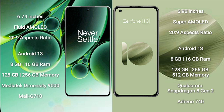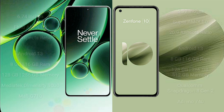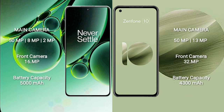OnePlus Nord 3 comes with 8GB or 16GB RAM and 128GB or 256GB internal storage, with a MediaTek Dimensity 9000 processor and Mali-G710 GPU. Asus Zenfone 10 comes with 8GB or 16GB RAM and 128GB, 256GB, or 512GB internal storage, with a Qualcomm Snapdragon 8 Gen 2 processor and Adreno 740 GPU.